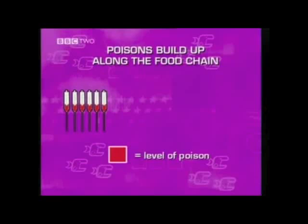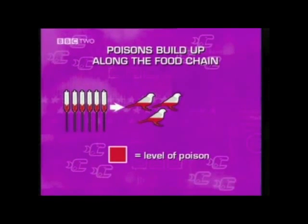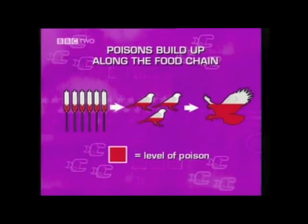Another factor that affects the size of populations is the activity of humans, either by producing pollution or by leaving toxic substances in the environment. Sometimes these toxic, poisonous substances get into and are passed along a food chain. The plants and animals near the start of a food chain are usually unharmed by the relatively low concentrations of poison. But as it passes along the chain, it becomes more concentrated, so the animals at the top take in large amounts of poison which their bodies can't get rid of.